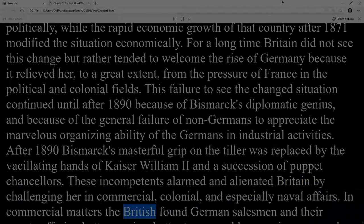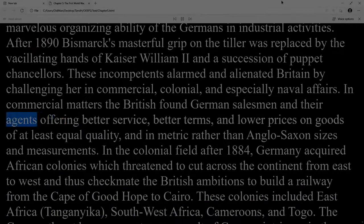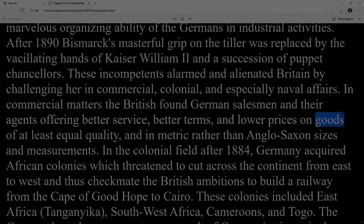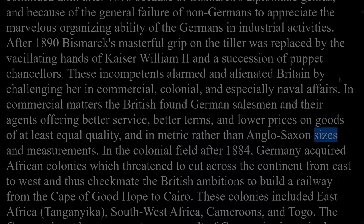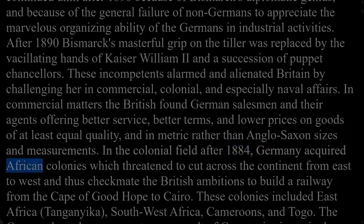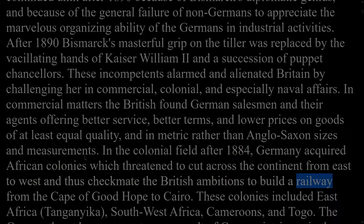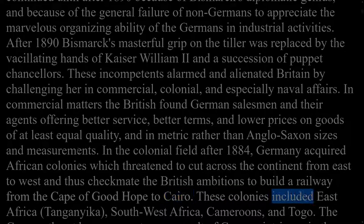In commercial matters the British found German salesmen offering better service, better terms, and lower prices on goods of at least equal quality, in metric rather than Anglo-Saxon sizes and measurements. In the colonial field after 1884, Germany acquired African colonies which threatened to cut across the continent from east to west and thus checkmate British ambitions to build a railway from the Cape of Good Hope to Cairo. These colonies included East Africa, Tanganyika, Southwest Africa, Cameroons, and Togo.